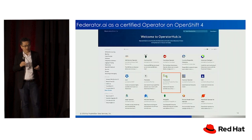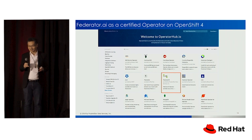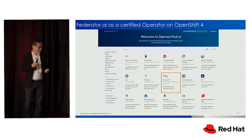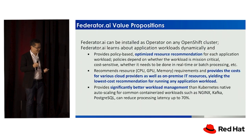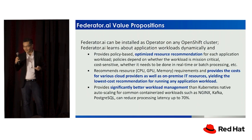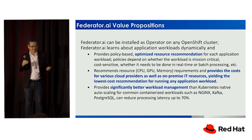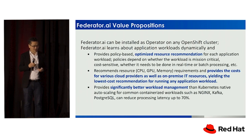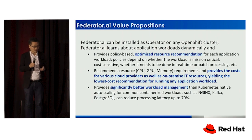We are a level five certified operator, and thanks to Red Hat support, we completed this certification process in a very short time — my team said it was less than a week, a couple of days. Level five fully certified helps a lot when we sell to customers. Once we tell customers it's an operator, they understand it's very simple to install and upgrade. To summarize: we give policy-based, optimized resource recommendations for any workload, including CPU, memory, and GPU — and we tell users the best cost from all three providers.